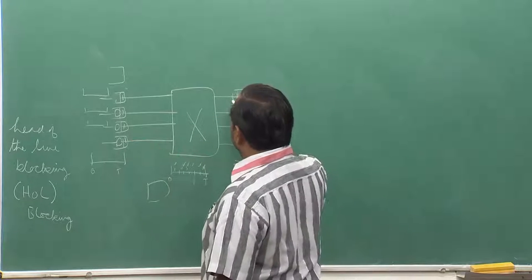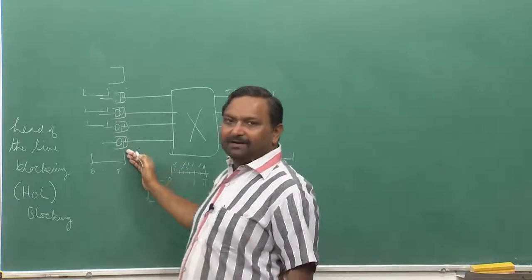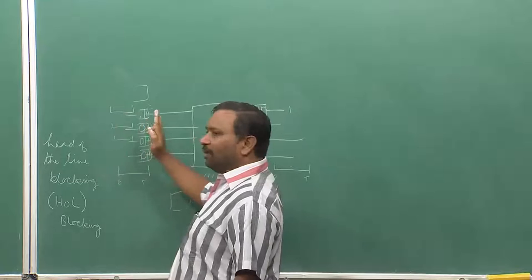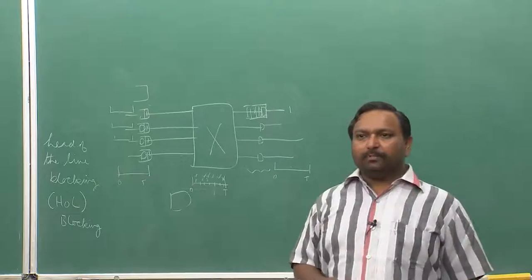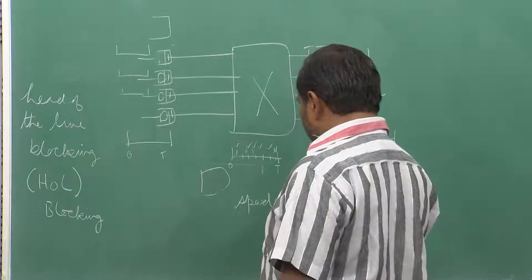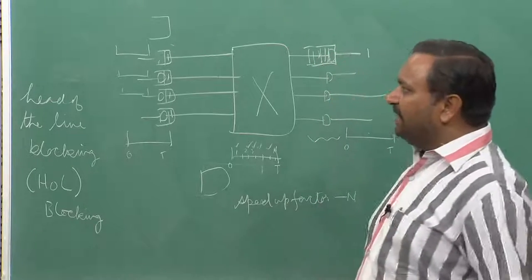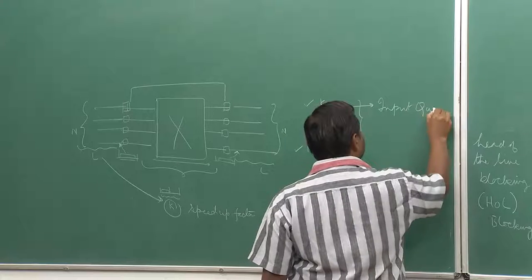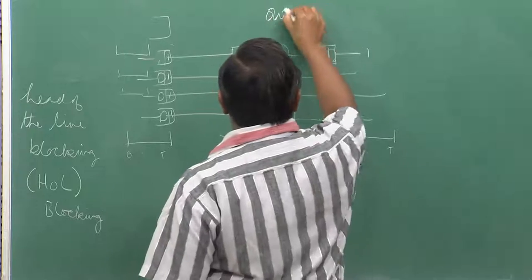With k equal to n, in each synchronized slot one packet comes in and all are pushed out through the switch. Queuing happens only at the outgoing line, not at the input. So when the speed-up factor is 1, you end up in an input-queued system; when k equals n, you end up in an output-queued system.